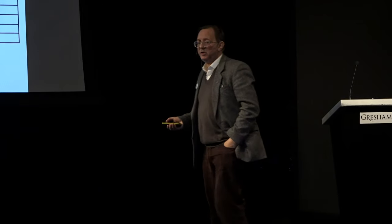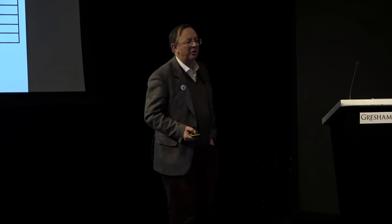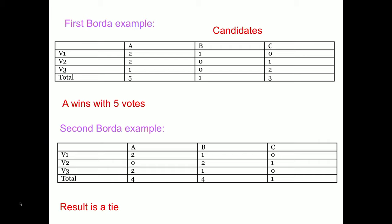I'll be using tables with candidates along the top and voters on the side. In this election with three candidates A, B, C and three voters V1, V2, V3 — with three candidates the top score is two — voters 1 and 2 gave A two votes, voter 3 gave A one vote, so A gets a total of five. B gets one, C gets three. A has clearly won and also won the majority of the votes, so there's a clear winner: A.